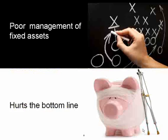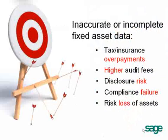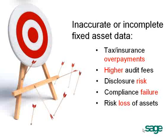So why is fixed asset management so important? Why is it such a critical business function? The main reason is that fixed asset management directly and significantly affects the company's bottom line. What kind of effect it has depends on how well the assets are managed. Inaccurate or incomplete fixed asset data often results in tax and insurance overpayments, higher-than-necessary annual audit fees, increased disclosure risk, compliance failures, and elevated risk of losing assets — theft being an example of this.